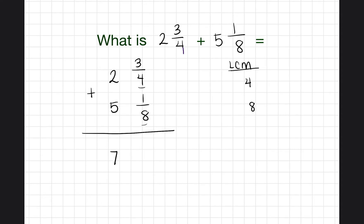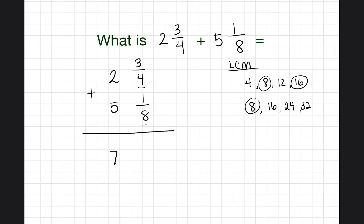We're going to find the multiples common to both lists, then find the least one. Counting by fours: four, eight, twelve, sixteen. Counting by eights: eight, sixteen, twenty-four, thirty-two. Eight and sixteen appear in both lists. Out of those common multiples, eight is the least, so our new denominator for both fractions is going to be eight.